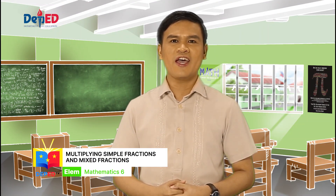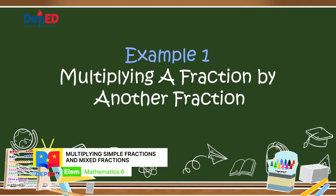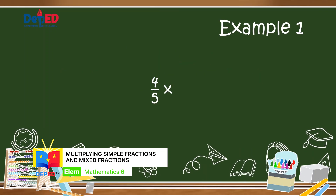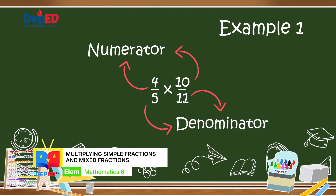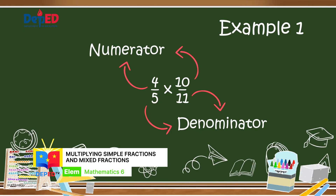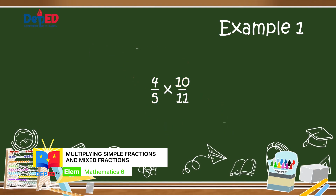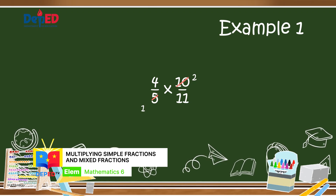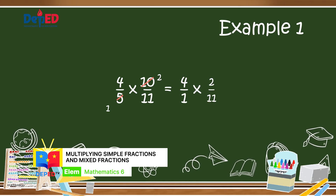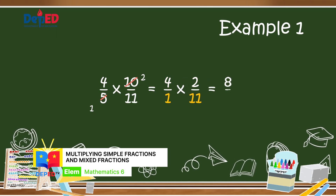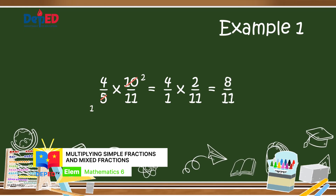Let us use the cancellation method in the following examples. Example number 1: multiplying a fraction by another fraction — 4 fifths times 10 elevenths. First, look for the possible numerator and denominator to cancel. The pair with a common factor is 5 and 10; their greatest common factor is 5. Divide both by 5: 5 divided by 5 becomes 1, and 10 divided by 5 becomes 2. Now multiply: 4 times 2 equals 8, and 1 times 11 equals 11. So we have 8 elevenths — the final answer.